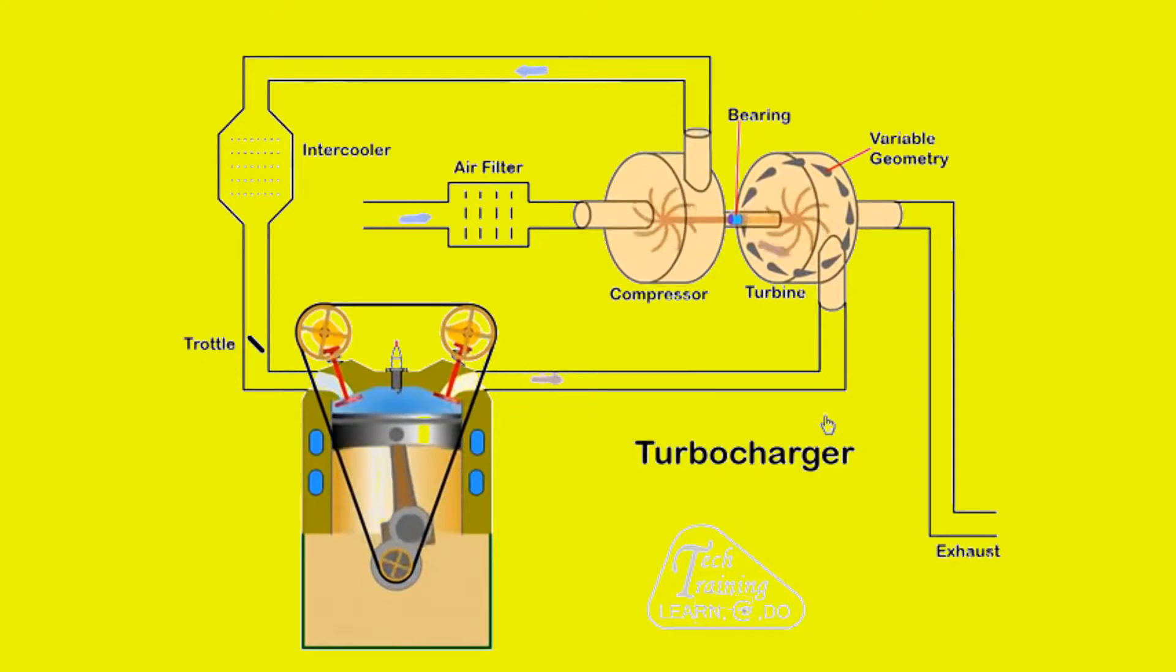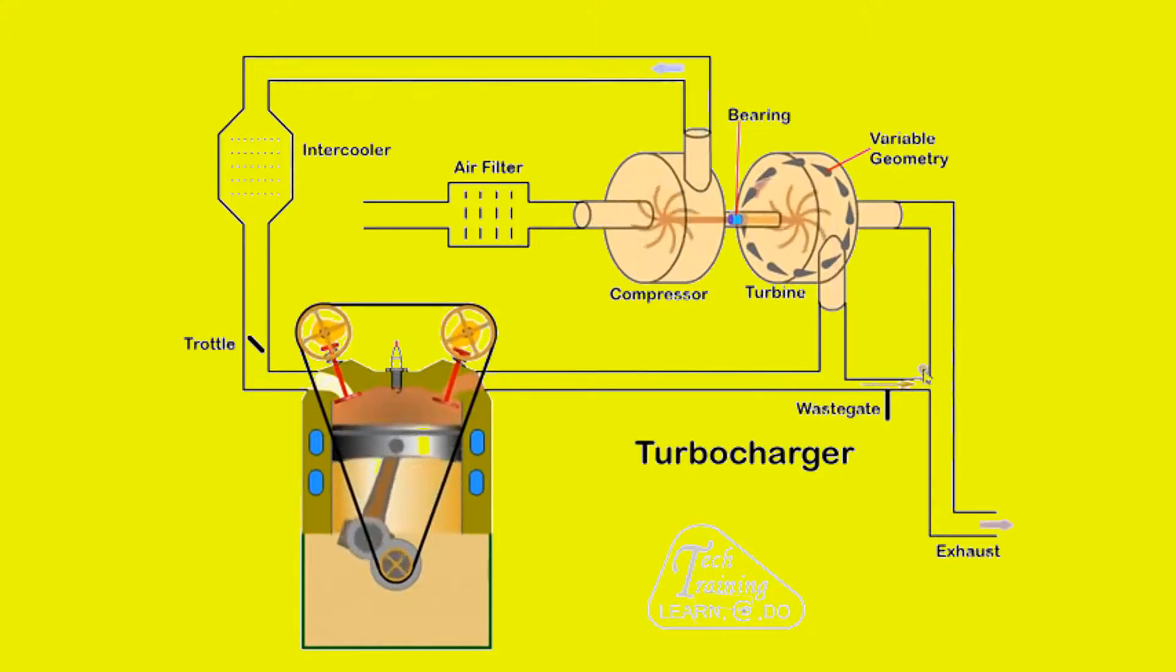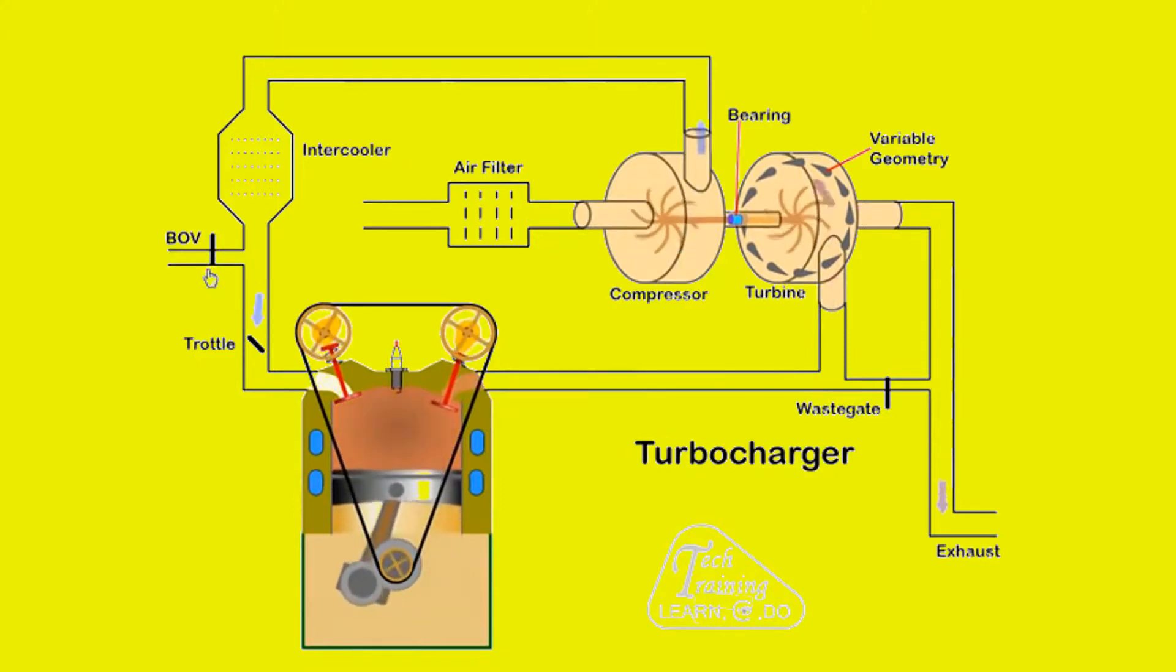Other ancillary equipment include a waste gate. It is used to bypass some of the exhaust gas from the turbine when it is not required. A BOV, blow-off valve or dump valve is used to vent pressurized air to atmosphere when the throttle valve is closed, thus preventing damage to the compressor. It tends to make a whoosh sound when it activates.